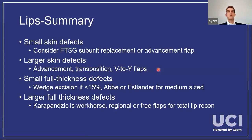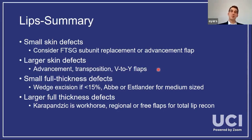Summary of lips: small skin defects — full thickness skin graft, reconstructing the entire subunit if possible. Local advancement flaps are the workhorse go-to. For larger skin defects — V-to-Y flap in the upper lip, or other advancement/transposition flaps. Full thickness defects: if small, a wedge works great; if bigger, think about lip switch depending on location. Really big ones — Karapandzic, sometimes Karapandzic plus Abbey, or bringing in non-lip tissue like cheek advancement, Gillies fan flaps, or free tissue transfer in certain cases.